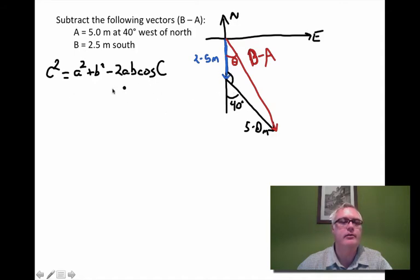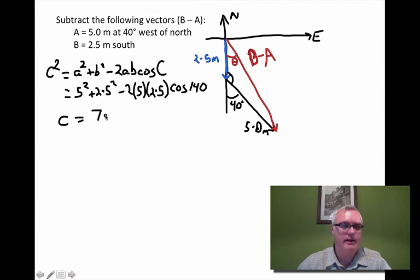So this is going to be C squared equals 5 squared plus 2.5 squared minus 2 times 5 times 2.5 times cosine of 140. So, when we put all of that into our calculator, what we find is that that vector is 7.1 meters in length. And again, that makes sense. It looks like it's obviously the longest side. It has to be longer than 5. So I'm happy with that answer so far.